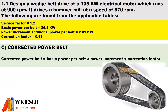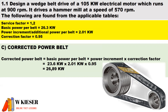In part c, we need to calculate the corrected power per belt. To do that it is the basic power per belt multiplied by the power increment and multiplied by the correction factor. Therefore it's 23.6 kilowatts for the basic power per belt, multiplied by the additional power per belt of 2.01 kilowatts, and multiplied by the correction factor of 0.95. We end up with an answer of 26.89 kilowatts for the corrected power per belt.